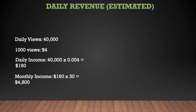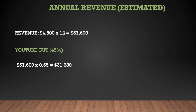This is going to be an estimate. Every thousand views gives a YouTuber about four dollars. So daily income is 40,000 multiplied by $0.004, which equals $160. Monthly income is $160 multiplied by 30, which gives you $4,800.